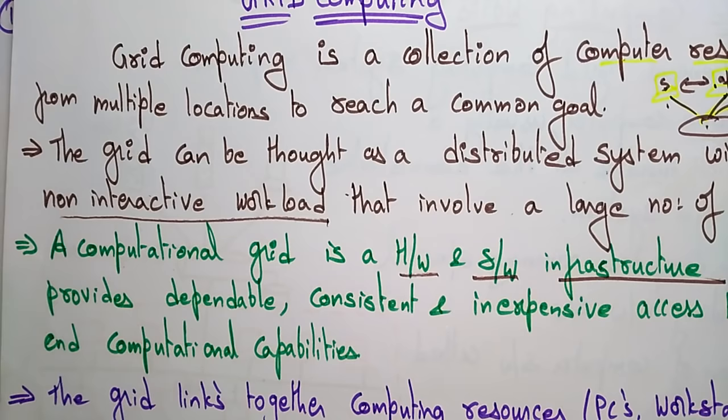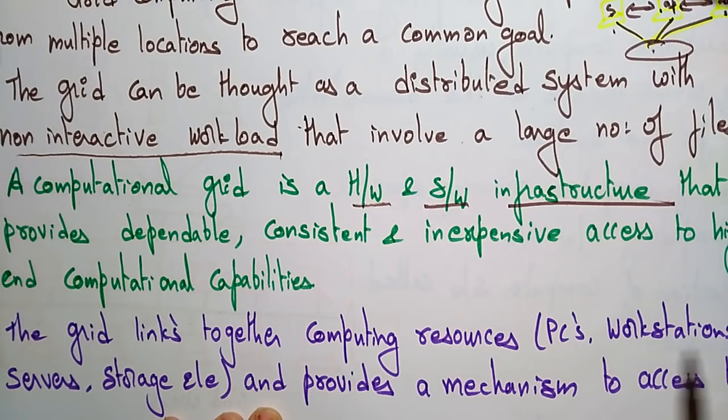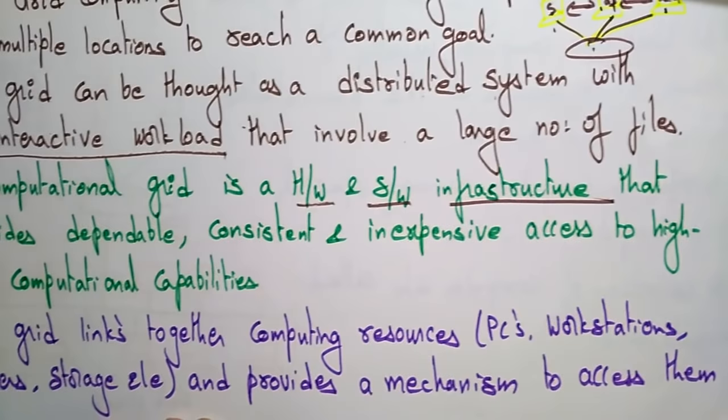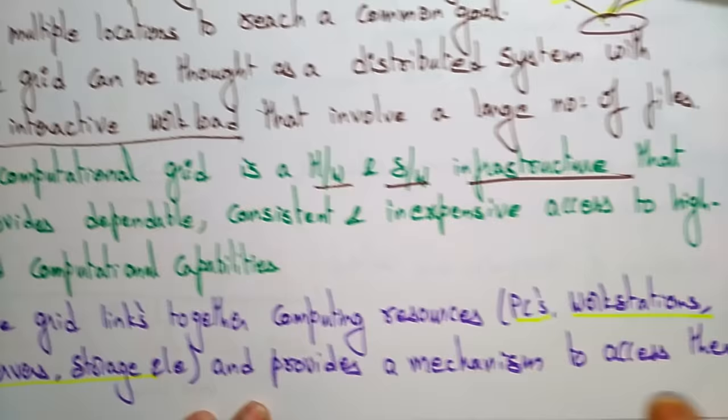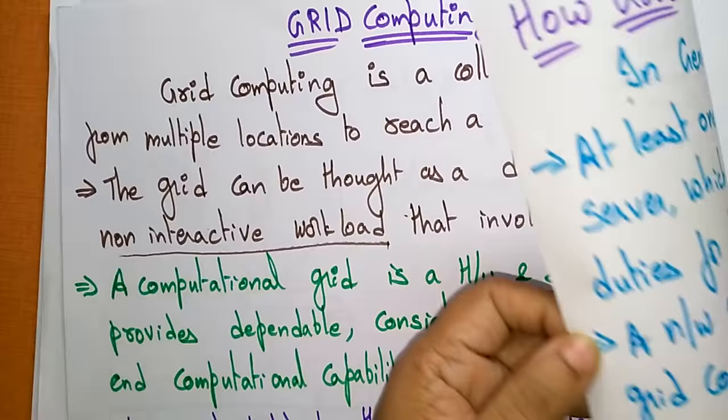The grid links together computing resources like PCs, workstations, servers, and storage elements, and provides a mechanism to access them. Let's see how grid computing works.